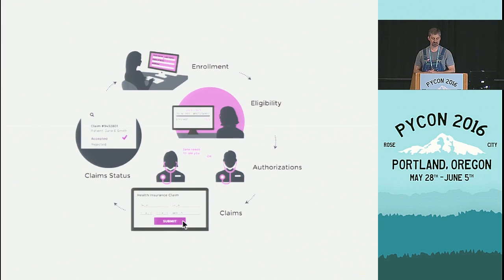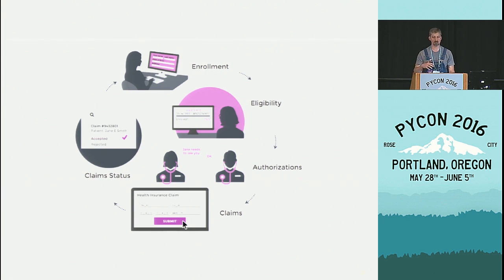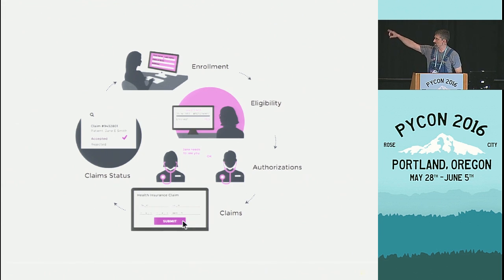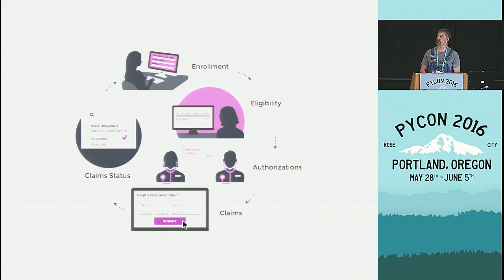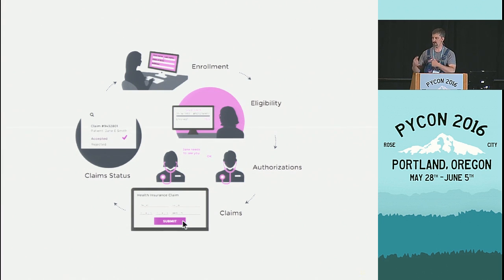Folks at PocketDoc have worked really hard to help visualize how these transactions fit together, because it gets really complicated very quickly. For folks with really good technical ideas but new to healthcare, we've been trying to help them implement their ideas more quickly. As you can see, you enroll in benefits, then check your eligibility, potentially get authorized for a service, file claims, check the status of those claims — you could do that in a whole loop — and if you don't like your plan, you can change and re-enroll.